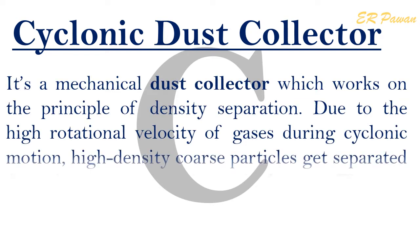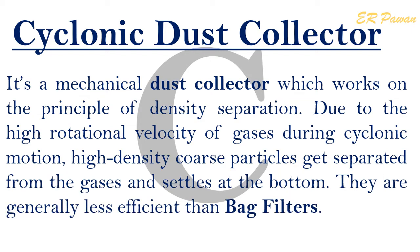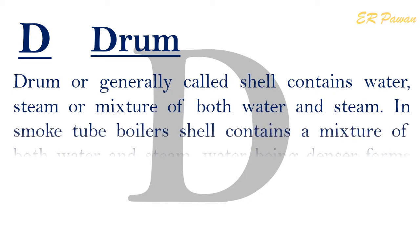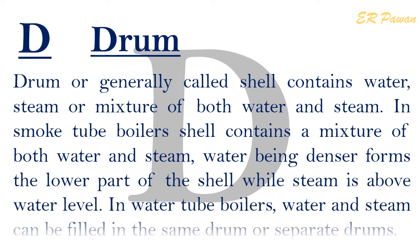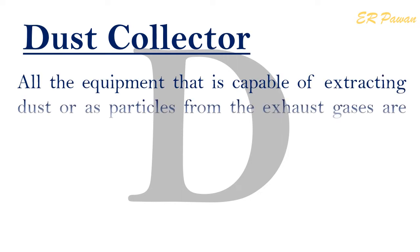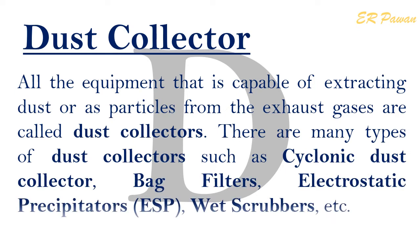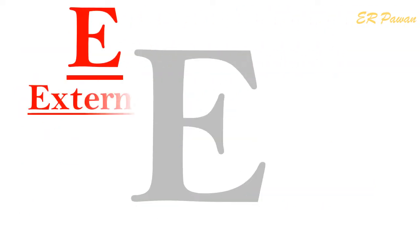Cyclonic Dust Collector: It is a mechanical dust collector which works on the principle of density separation. Due to the high rotational velocity of gases during cyclonic motion, high density coarse particles get separated from the gases and settle at the bottom. They are generally less efficient than bag filters. D — Drum: A drum or shell contains water, steam, or a mixture of both. In smoke tube boilers, the shell contains a mixture of both water and steam. In water tube boilers, water and steam can be in the same drum or separate drums. Dust Collector: All equipment capable of extracting dust or ash particles from exhaust gases are called dust collectors. Types include cyclonic dust collectors, bag filters, electrostatic precipitators (ESP), scrubbers, etc.